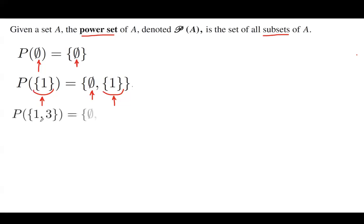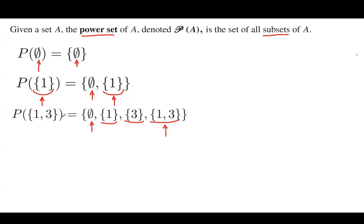The power set of a set including 1 and 3 includes the empty set, the set including 1, the set including 3, and the set including 1 and 3. The cardinality of the power set here is 1, then 2, then 3 and 4.